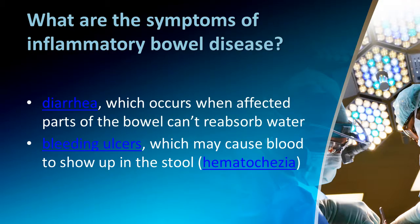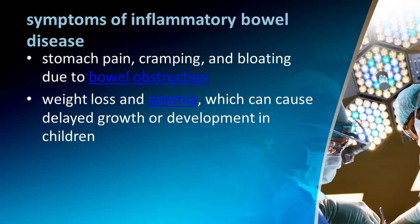To recapitulate, the symptoms of inflammatory bowel disease include: diarrhea, which occurs when affected parts of the bowel cannot reabsorb water; bleeding ulcers, which may cause blood in the stool or hematochezia. IBD may also show stomach pain, cramping, and bloating due to bowel obstruction, as well as weight loss and anemia, which can cause delayed growth or development in children.